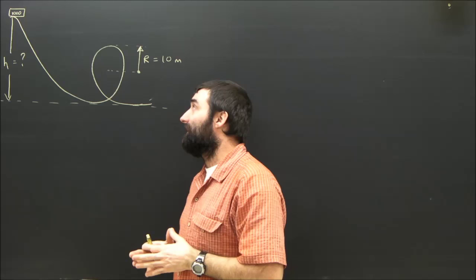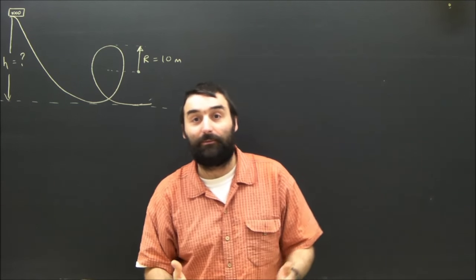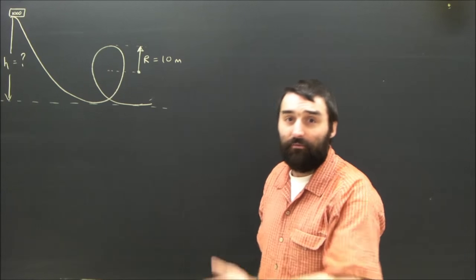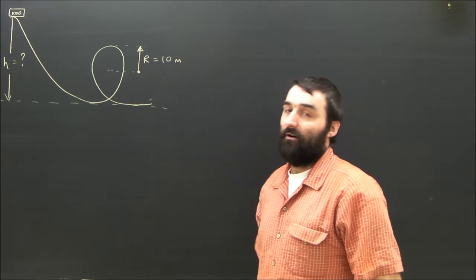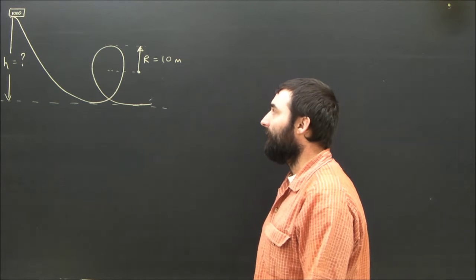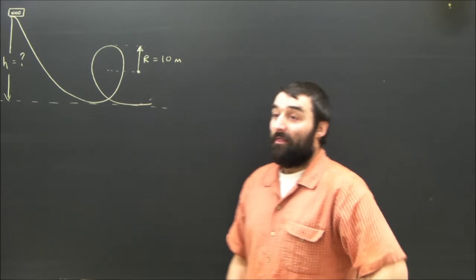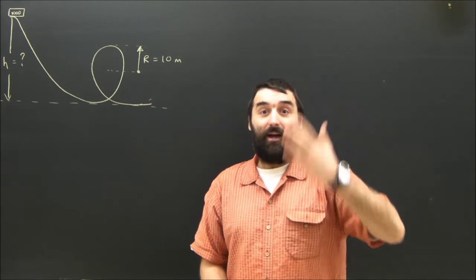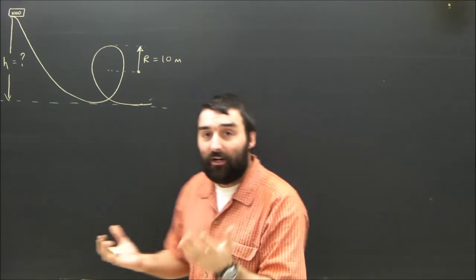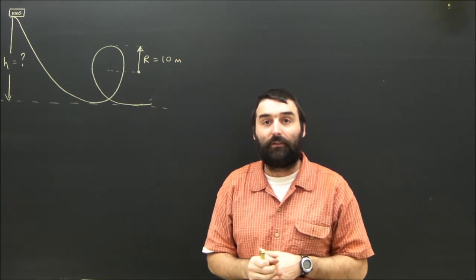That's a pretty necessary assumption because as it goes through the loop, the normal force will constantly be changing, the force of friction will constantly be changing, and without some good calculus we would have a lot of trouble figuring out the total effects of all that friction. But obviously in real life there would be some friction which would have to be considered. So this is really the minimum height—it would have to be higher than that to make up for friction. So what do we do? Well, it's sort of a conservation of energy problem, but there's also a bit of centripetal motion going on here.